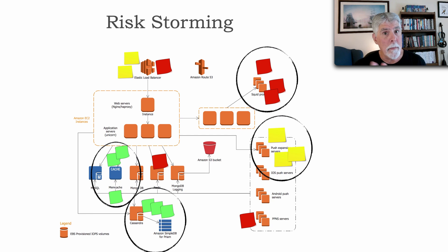Everybody thought that, or three people at least thought that the squid proxy servers were high risk. The push expansion servers over here were medium risk. And finally, low risk over in the memcache and Cassandra area. So since we all agreed, we're effectively done with those areas.